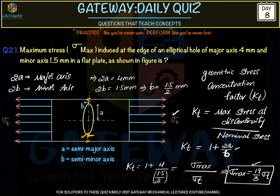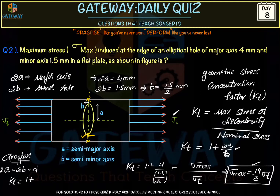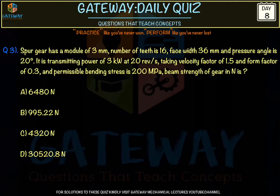For a circular hole (special case), 2a = 2b = diameter, so K_t = 1 + 2a/b = 1 + 2 = 3. For circular discontinuities we directly use K_t = 3. Moving to the next question: a spur gear has module m = 3 mm, number of teeth = 16, face width b = 36 mm.